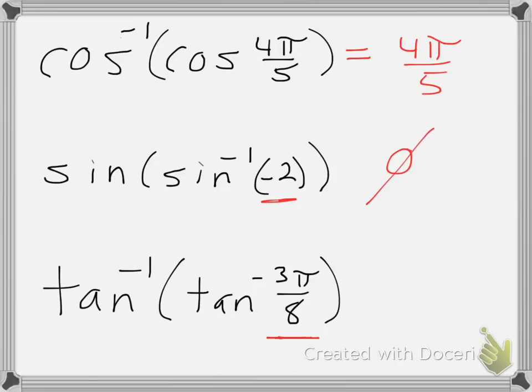So remember, our interval negative π over 2 to π over 2, one thing you can think of is purely as a decimal. Negative π over 2 is approximately negative 1.73. So we want something within this interval, negative 1.73 to positive 1.73.